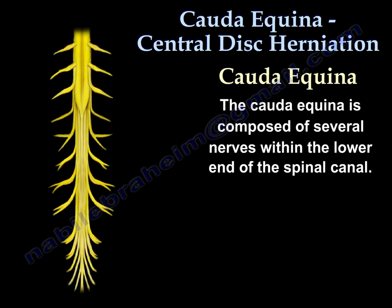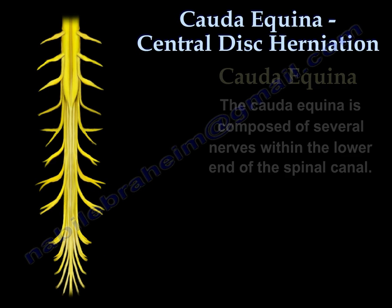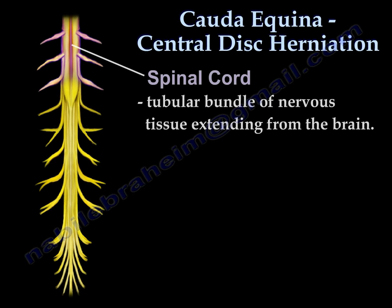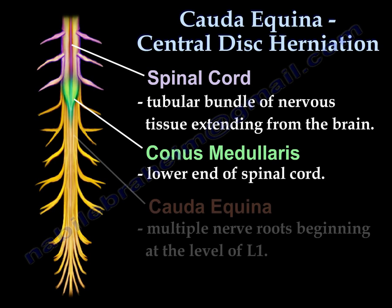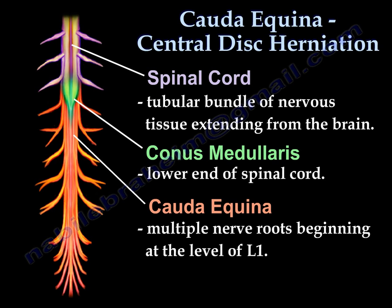Here you can see the spinal cord above, followed by the conus medullaris at the lower end of the spinal cord. The cauda equina are multiple nerve roots beginning at the level of L1.